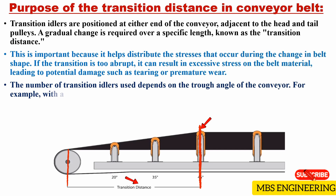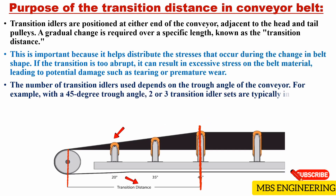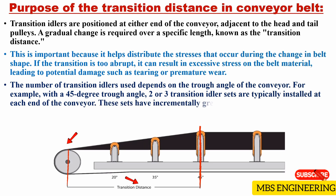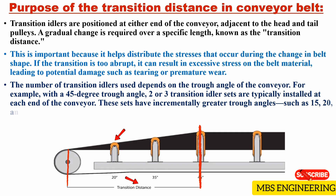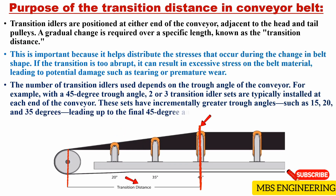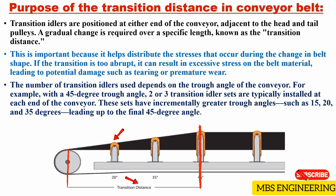For example, with a 45-degree trough angle, two or three transition idler sets are typically installed at each end of the conveyor. These sets have incrementally greater trough angles, such as 15, 20, and 35 degrees, leading up to the final 45-degree angle. For good practice, a 20-degree trough idler is commonly placed ahead of a 35-degree trough idler, and both a 20-degree and a 35-degree idler are positioned in front of a 45-degree idler.